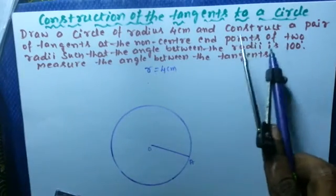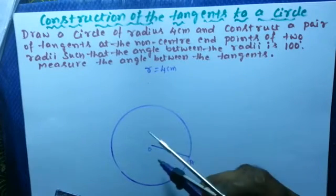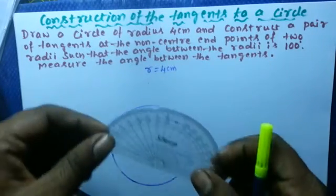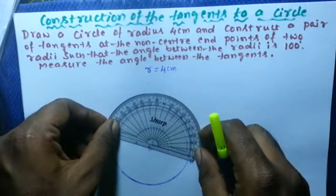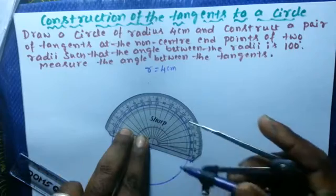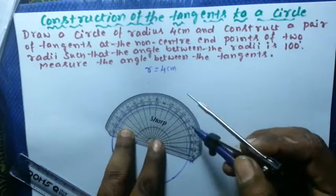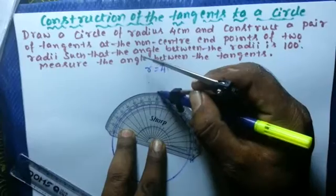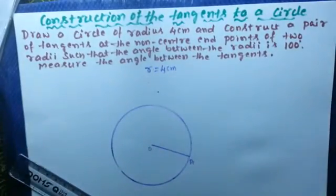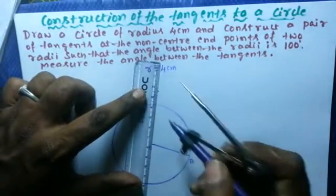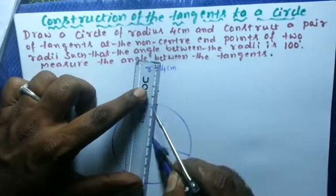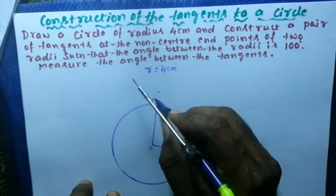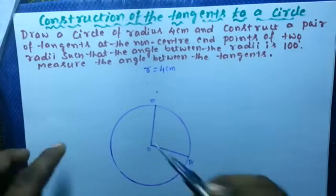The angle between the radii is 100 degrees. This is one radius; I will take another. Measure 100 degrees using a protractor from where the line is — measure 0, 10, 20, 30, 40, 50, 60, 70, 80, 90, 100 — mark here, then draw that second radius. Give the endpoint the name B.